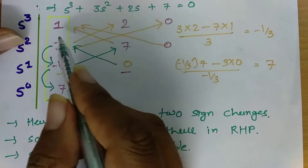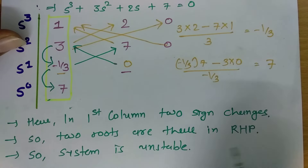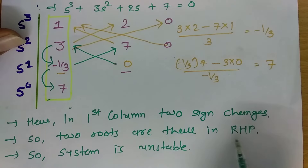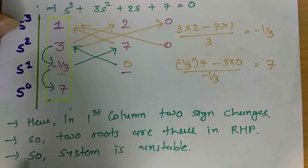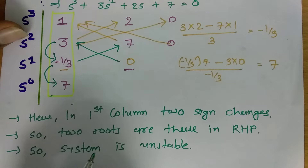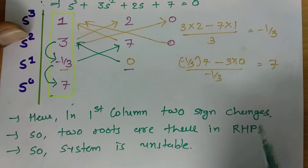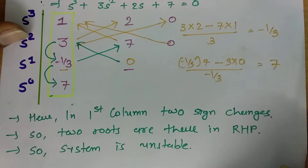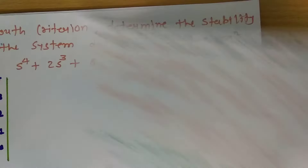For stability, there should be zero sign changes in the first column. If there is no sign change in the first column, there are no roots in the right half plane (RHP), and the system is stable. If sign changes are happening, it means roots are lying in the right half plane. Two sign changes here mean two roots in the RHP, resulting in an unstable system.